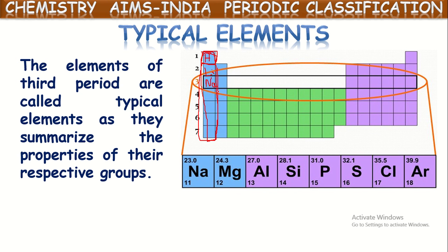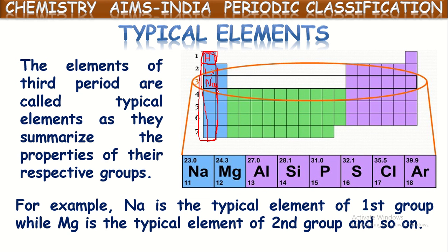What are the third period typical elements? Sodium and magnesium in the first and second groups, and then aluminum, silicon, phosphorus, sulfur, chlorine and argon — these eight elements of the third period are called typical elements. For example, sodium is a typical element of the first group, magnesium is a typical element of the second group, and sulfur is a typical element of the 6A group.